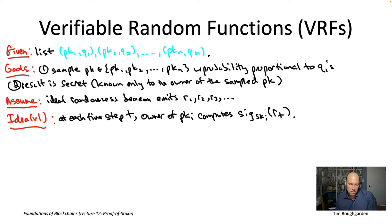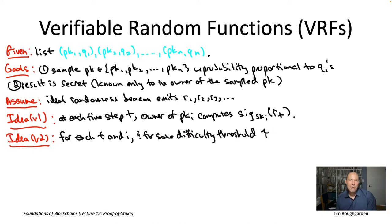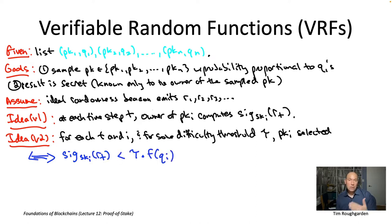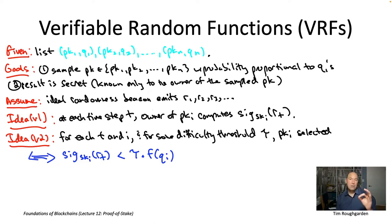That seems like a promising starting point — standing on the shoulders of digital signatures to get the secrecy property. But we're clearly not done, because we need to answer a binary question: is PK_i selected or not? One very natural approach for turning the signature into a predicate is to follow the exact same approach we used in Nakamoto consensus and proof of work. We had a difficulty threshold, and a nonce constituted a crypto puzzle solution if and only if the hash of that input was sufficiently close to zero — less than the difficulty parameter.